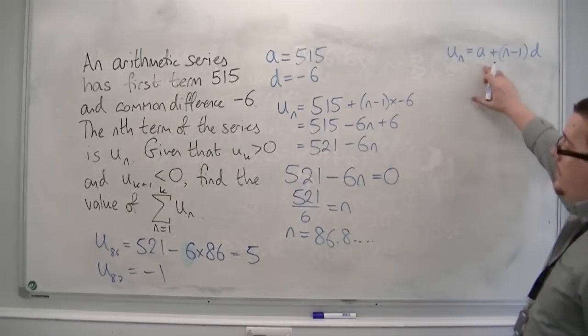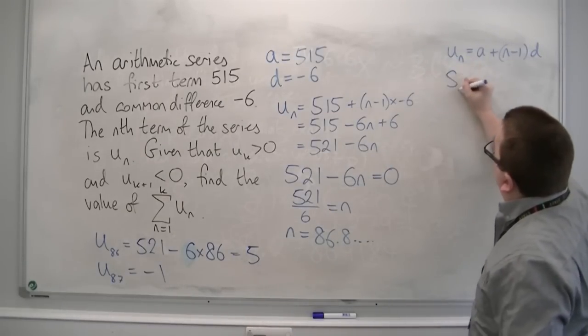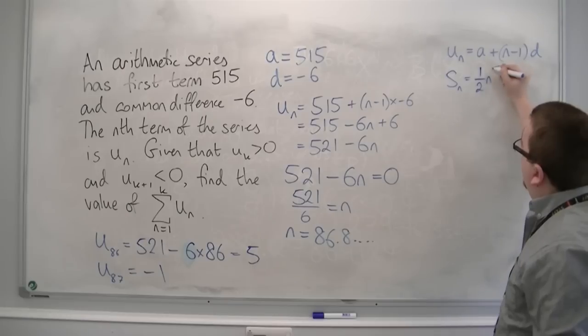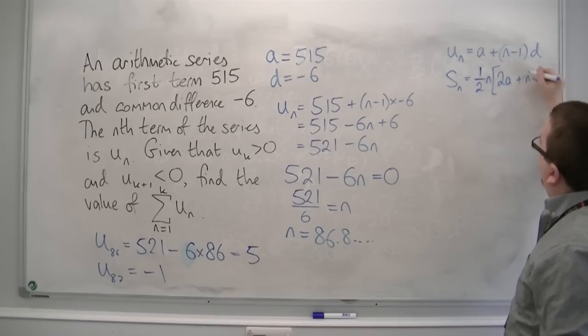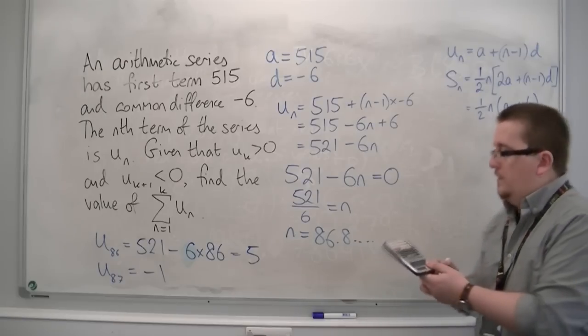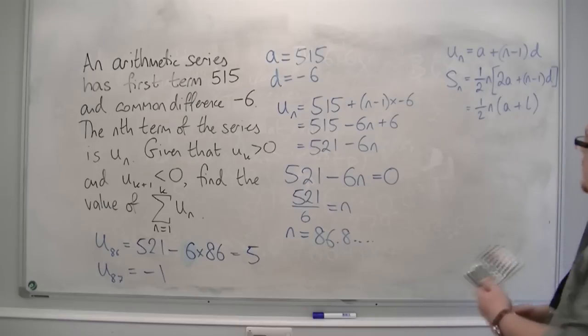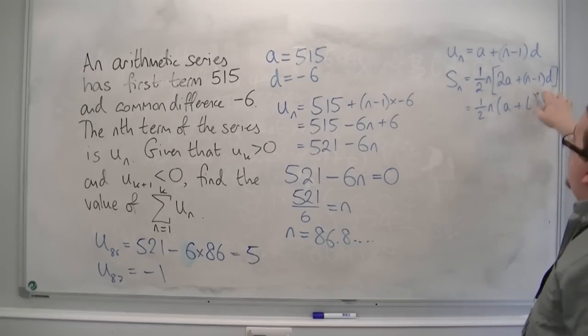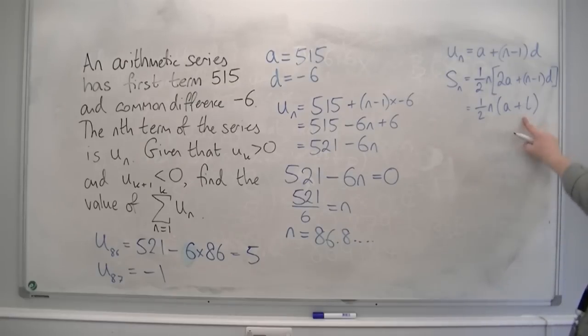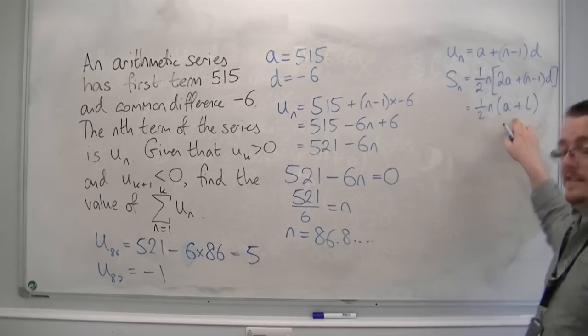Now, the other formula that we have given to us in the formula booklet is the sum of the first n terms. And that is (1/2)n(2a + (n-1)d), or you've got (1/2)n(a + l). Now, you can use either of these to do it, with a and d, which we have, and n is 86. Or, because we now know the last term, I could substitute them directly into this one.